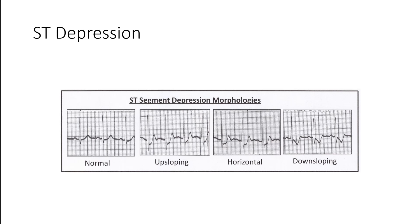There are variants of ST depression. A normal ST segment comes back to the isoelectric line. There can be upsloping depression — where the morphology slopes up back into the T-wave. There's horizontal, which is completely flat. And then there is downsloping ST depression. Upsloping may not necessarily be due to ischemia — you can see this in exercise, and it may just be artifact. Horizontal or downsloping variants are more likely due to ischemia or infarction.